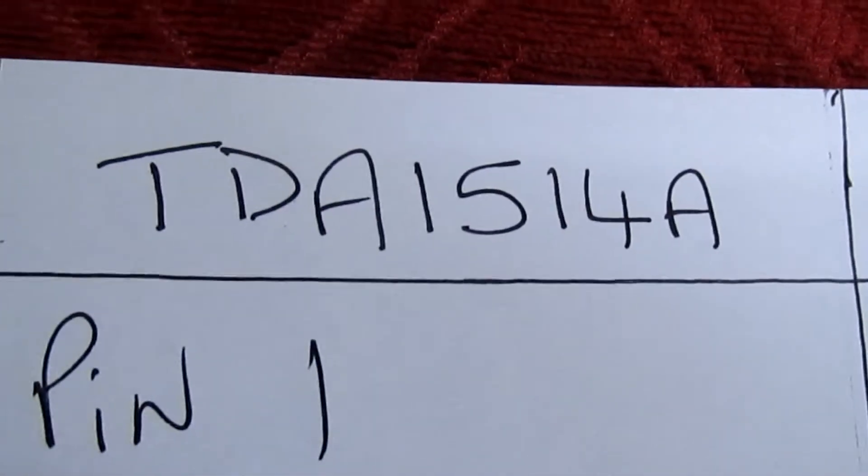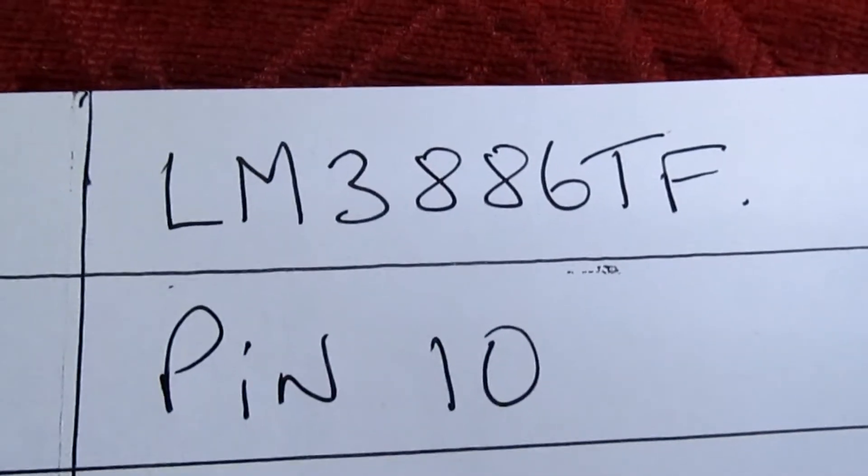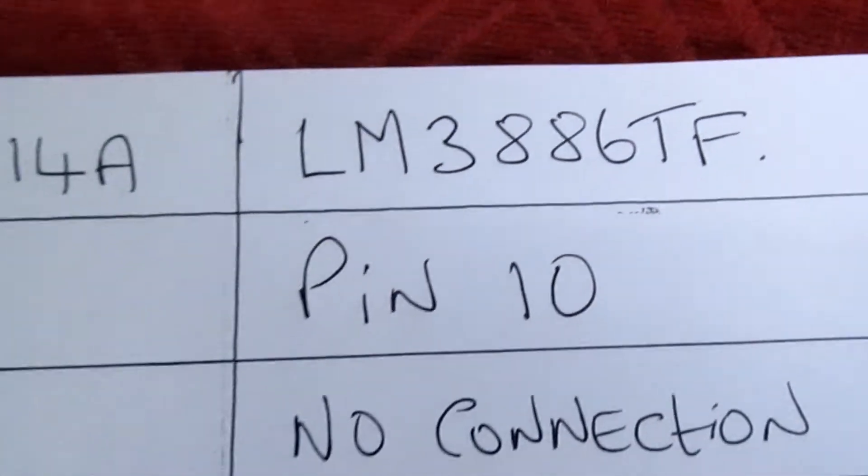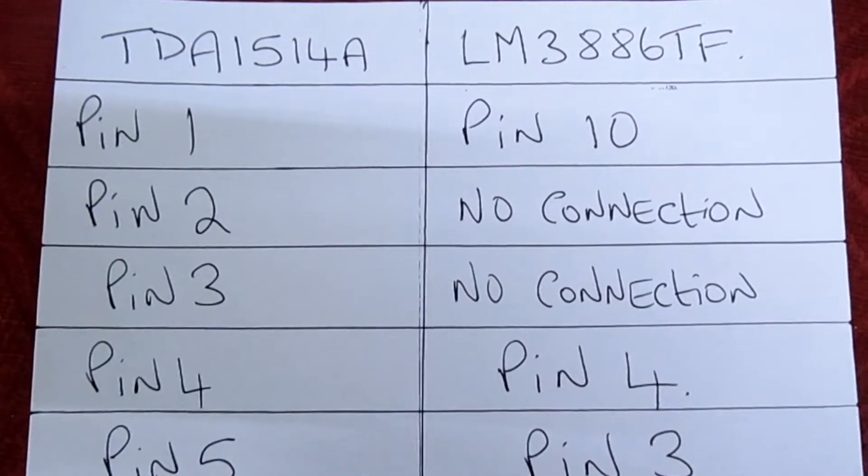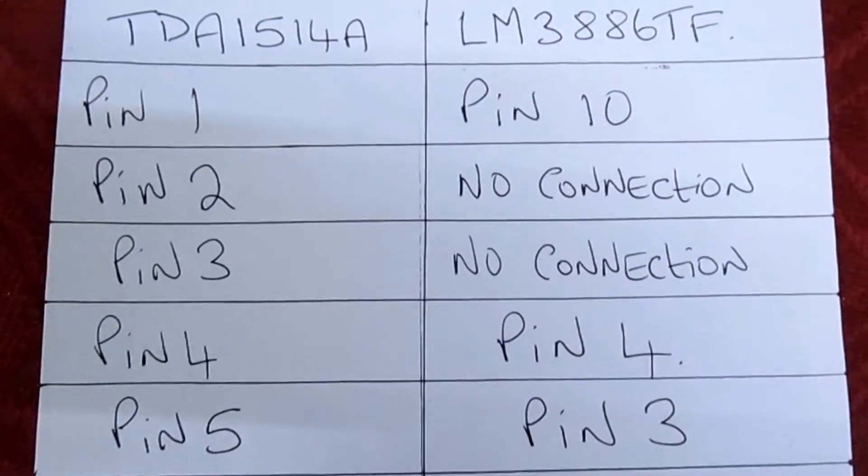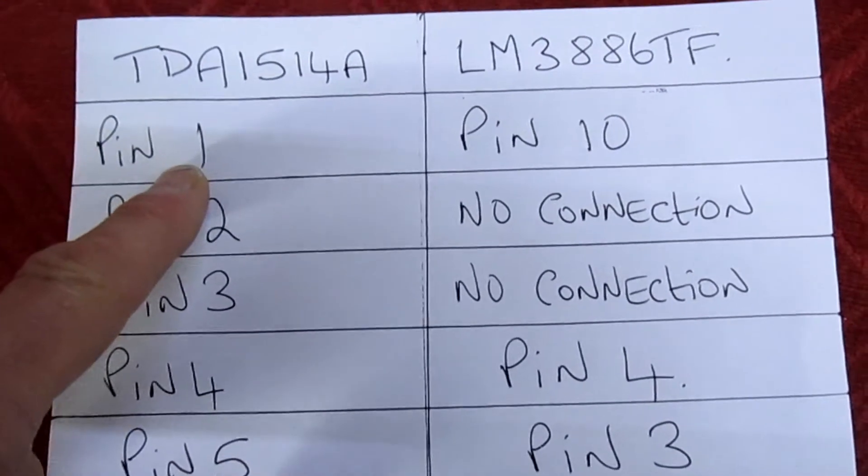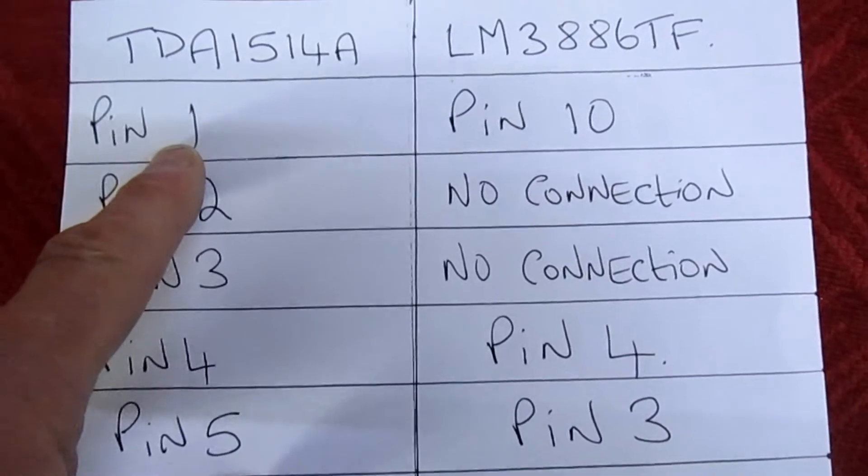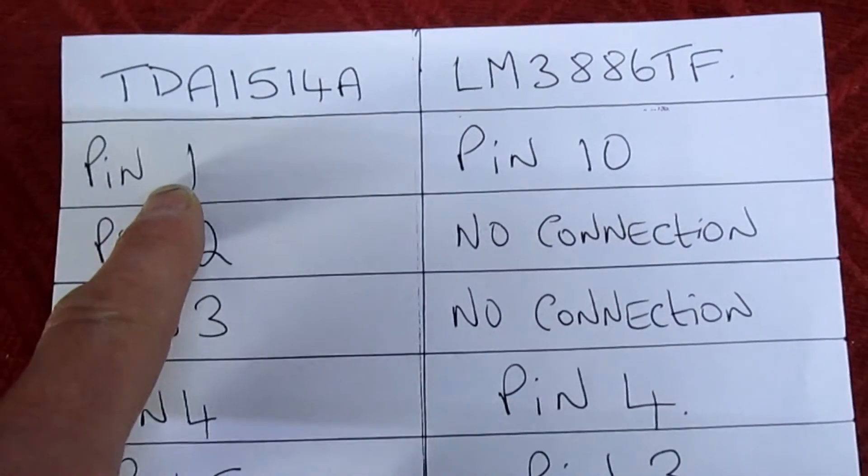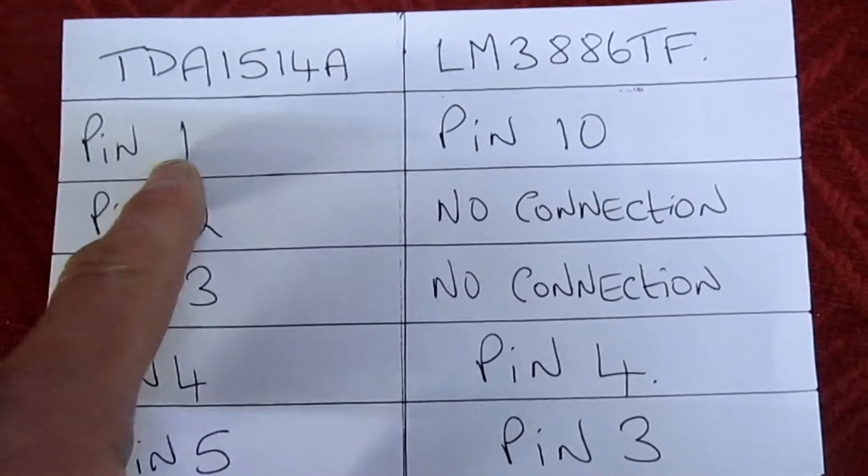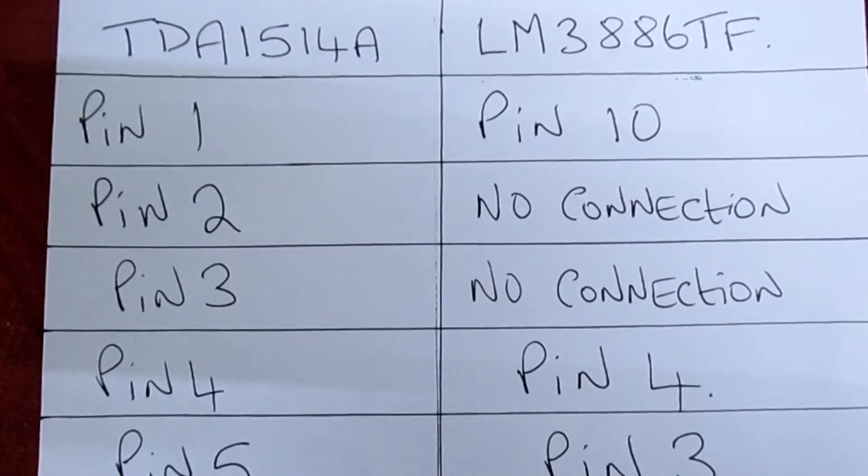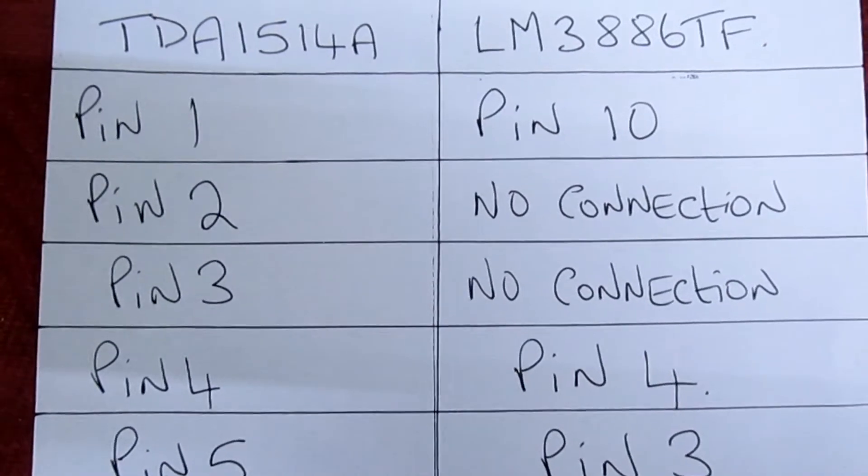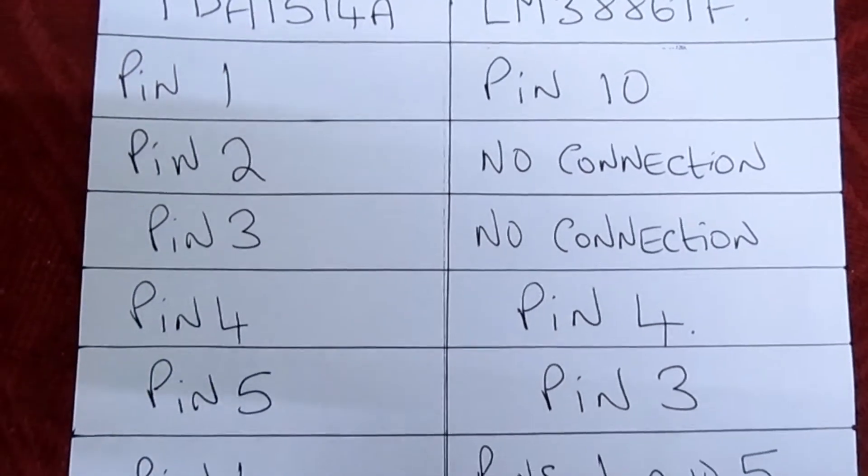That's the TDA1541 and that's the LM3886 TF. On here you have the pin for the TDA and the corresponding pin on the LM. Pin one on the TDA now has to go to pin 10 on the LM. I'll just hover over this slowly, you can stop the video and write all this down.